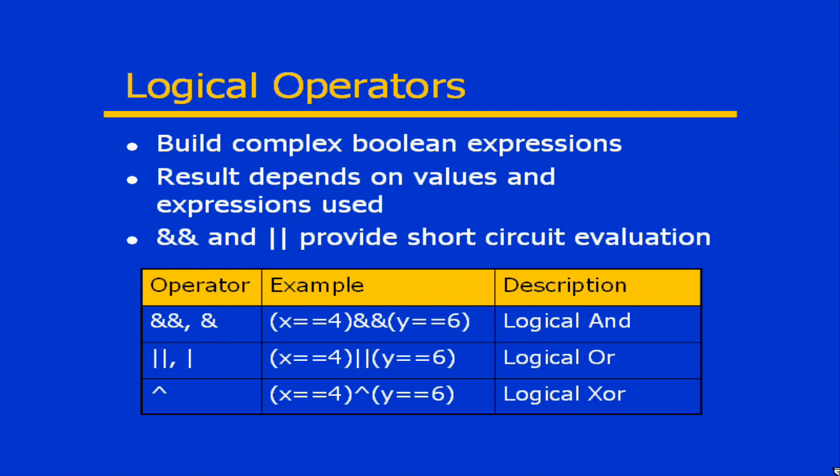Now the and operator, represented by the ampersand, is a way that we can test to make sure that one Boolean result and another Boolean result are both true. If that's the case, then the entire expression is true. There are two versions of the and operator.